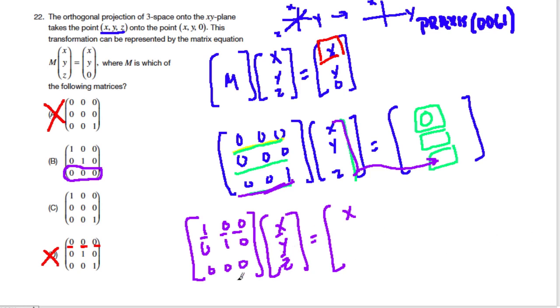In the next row, we have 0, 1, 0, times x, y, z. And now if you see the pattern, we're just going to get y. And then last, 0, 0, 0 gives us nothing. So we have used this matrix to map this to x, y, 0. So B is the answer.